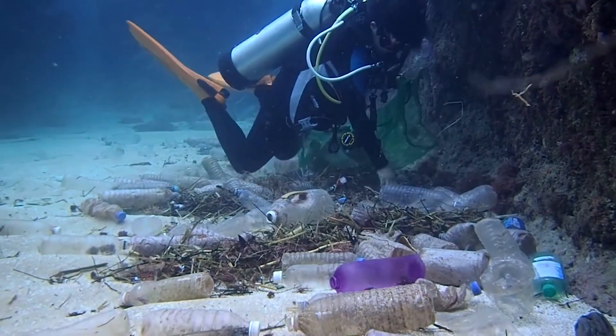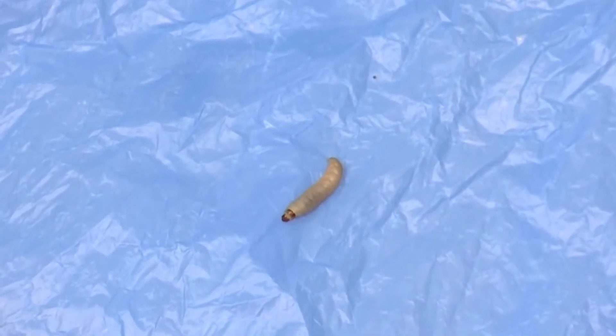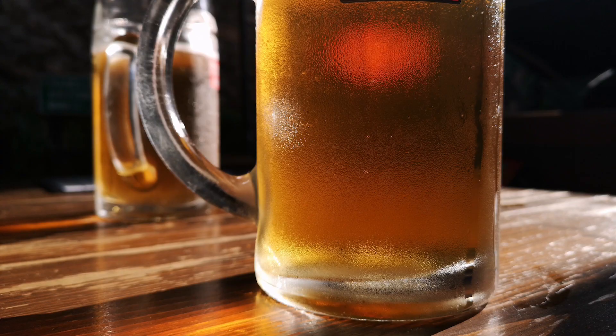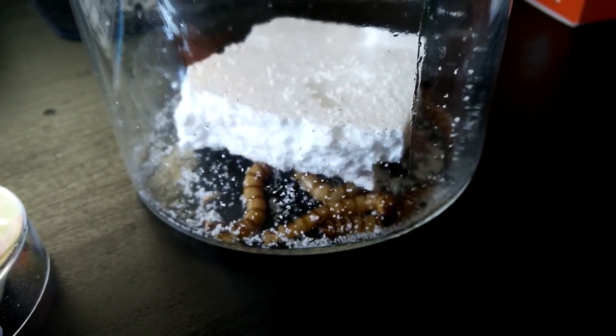There is no one solution to the plastic problem. Scientists have discovered that wax worms, typically used for fishing, can munch on plastic bags. These worms eat plastic and poop glycol, a form of alcohol. So can these worms help us eat our way out?